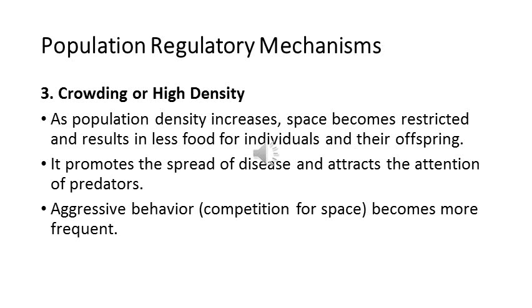Crowding or high density is another population regulatory mechanism. When the population increases rapidly, there is a crowding or high-density condition. Space becomes restricted, resulting in less food for individuals and their offspring. This depletion of food and space promotes the spread of diseases, and the high density of prey attracts predators. Thus, crowding and high density cause an increase in the death rate of the population and also promote aggressive behavior or competition for space and resources.